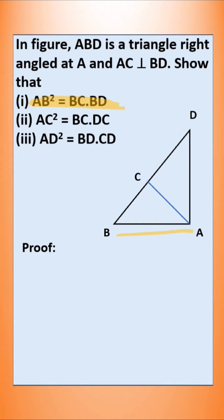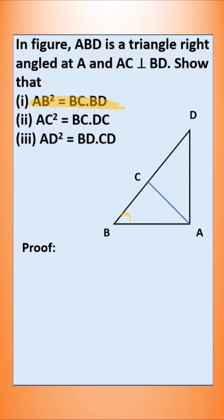Here is AB. BC is here. BD is here. Now we have to take the triangles BAD and also BCA. Observe that angle B is common. Angle A is equal to angle C. Hence, according to the angle-angle criterion, triangle BAD is similar to triangle BCA.